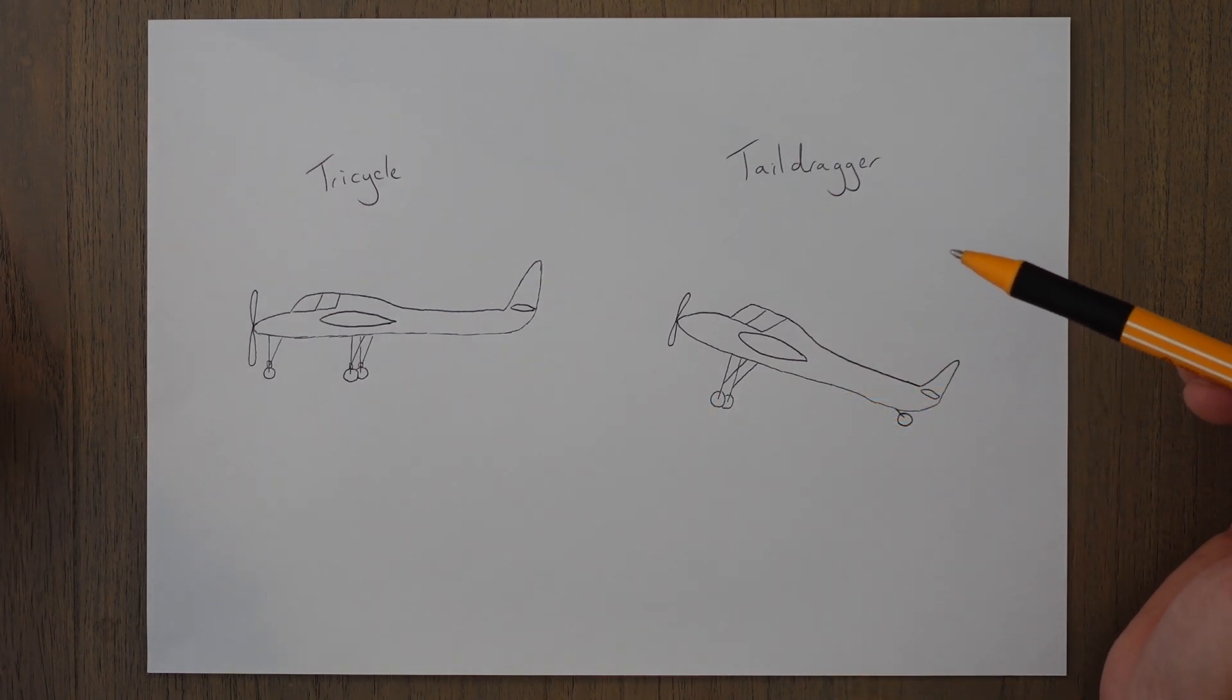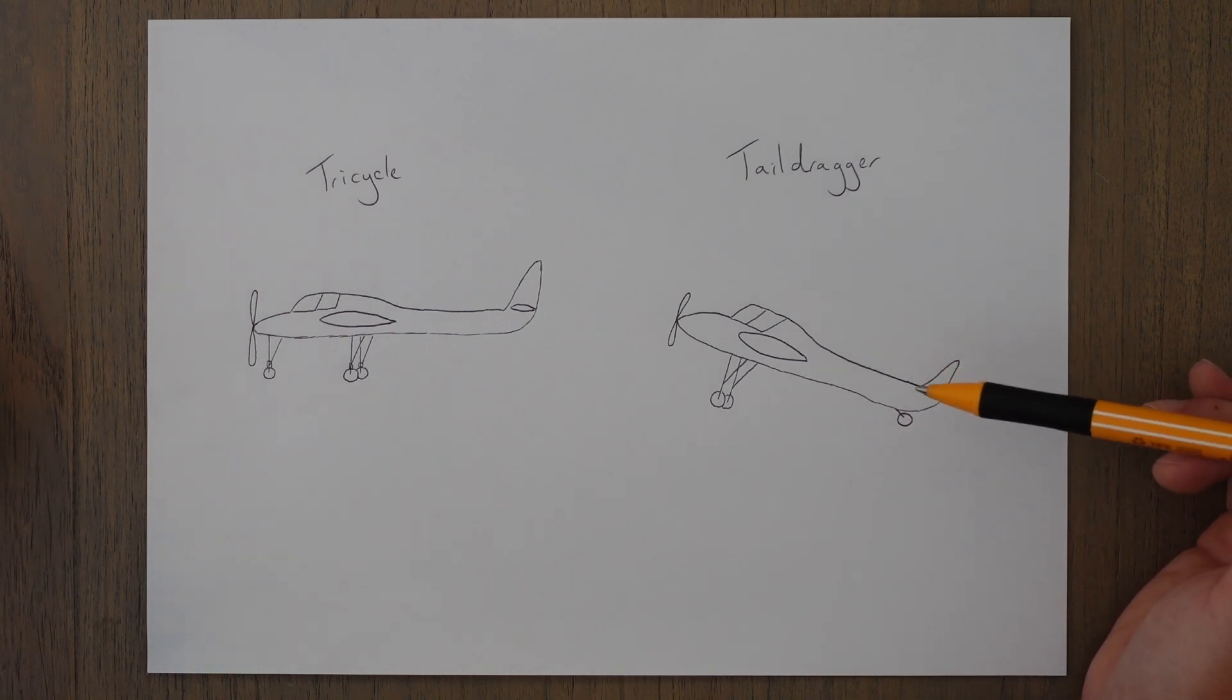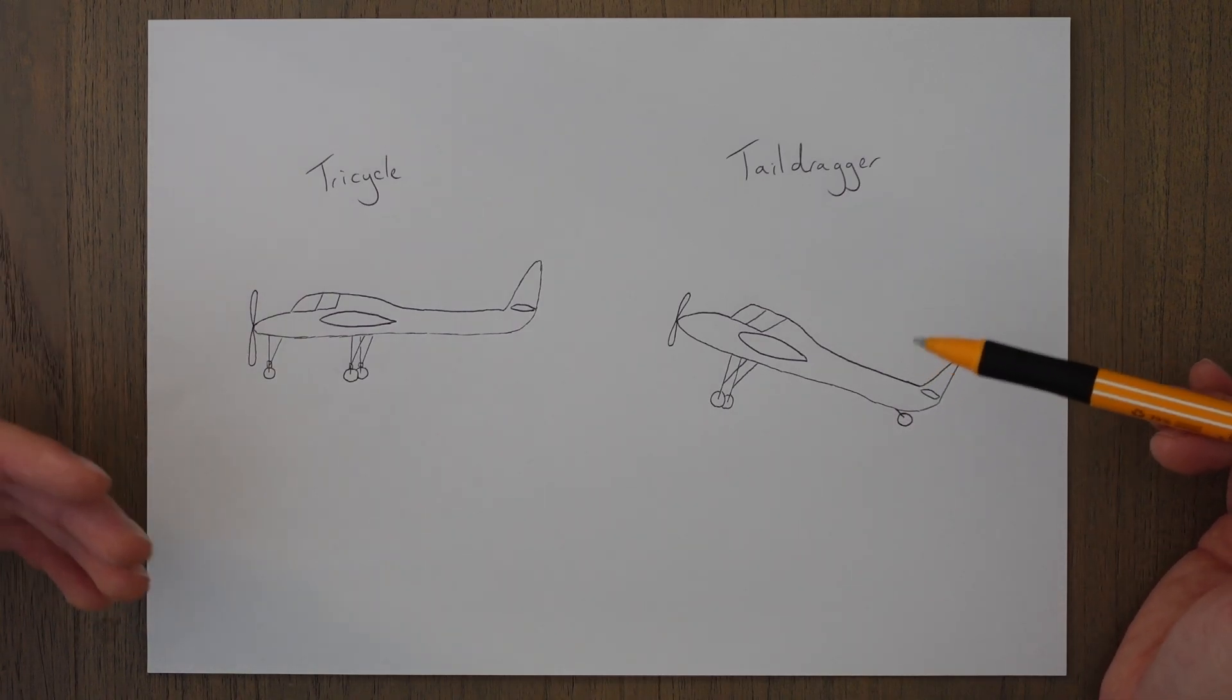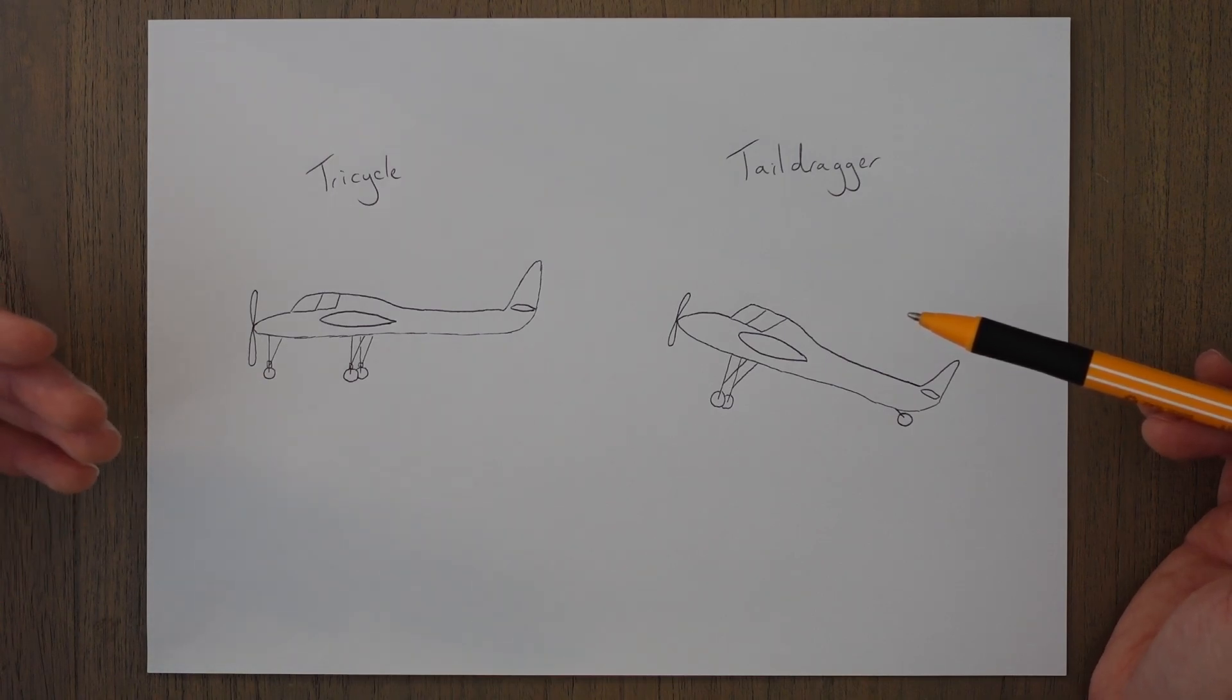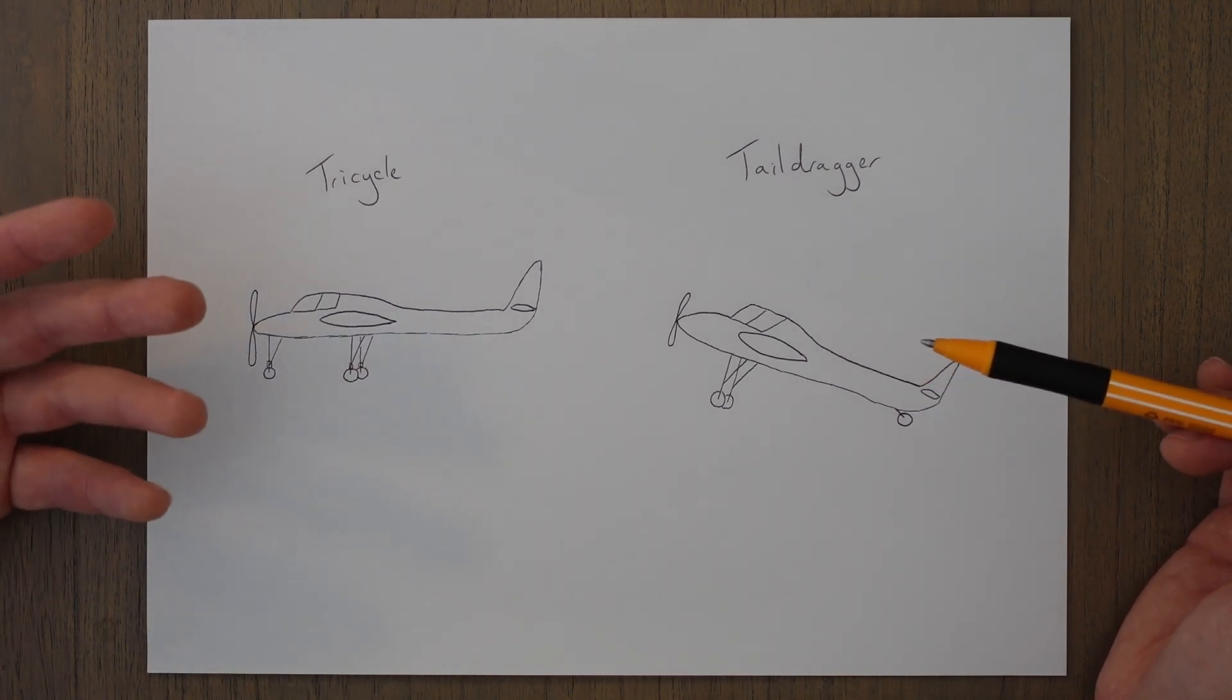The other arrangement is known as a tail dragger. These have two main wheels forward of the aircraft's center of gravity and a smaller wheel at the tail that is free to rotate a certain amount.